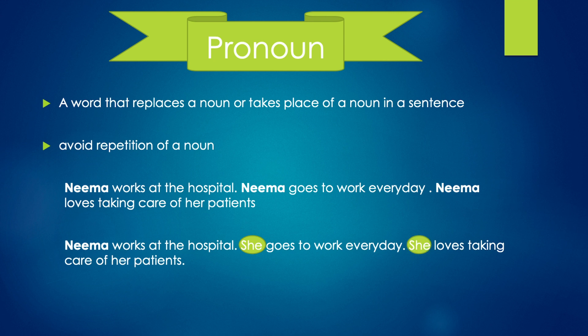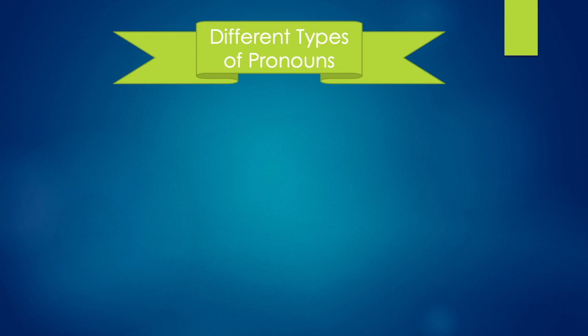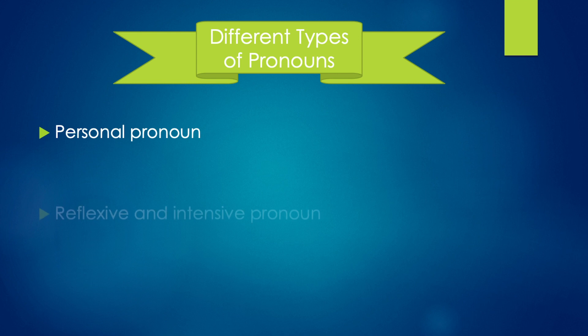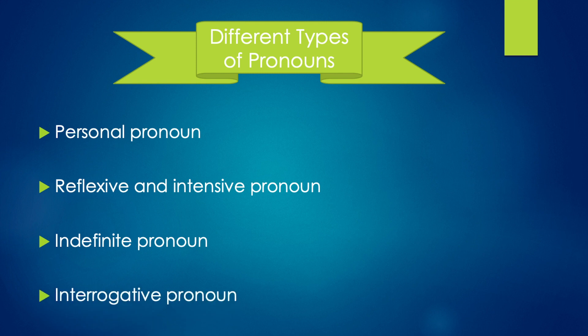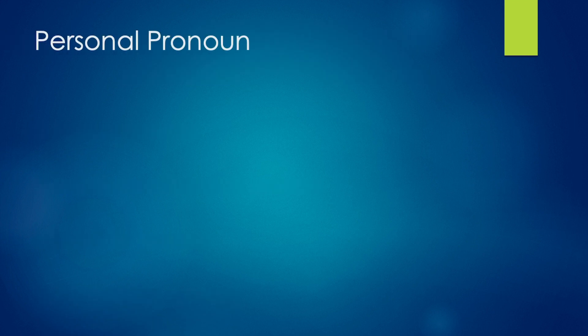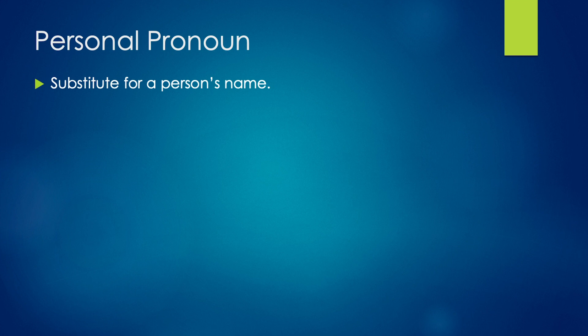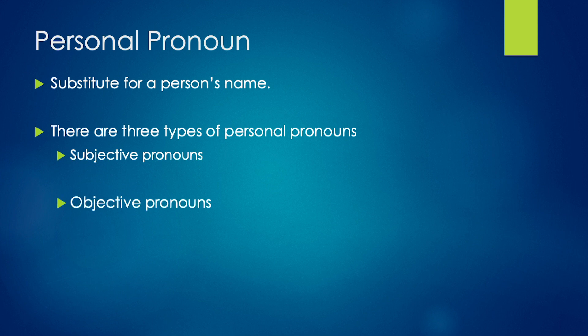Now let us discuss the different types of pronouns. Basically, pronouns are divided into the following categories: personal pronouns, reflexive and intensive pronouns, indefinite pronouns, and interrogative pronouns. Let's begin with personal pronouns — the pronouns that are used as a substitute for a person's name. These can further be divided into three types: subjective pronouns, objective pronouns, and possessive pronouns.